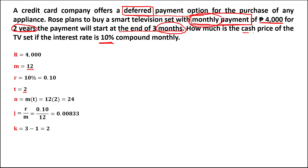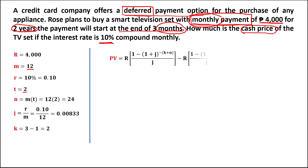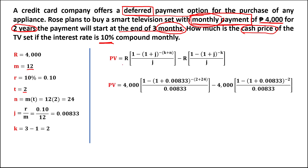To find the cash price of the TV set, we use the present value formula for a deferred annuity and substitute all the values. We have the regular payment of 4,000 pesos, the interest per period j of 0.00833, the periods of deferral K of 2, plus the number of periods of 24.